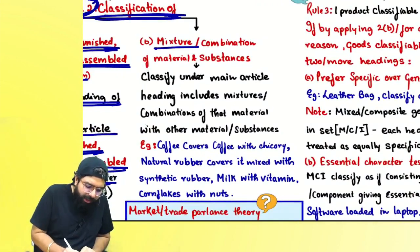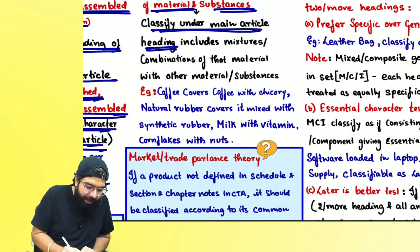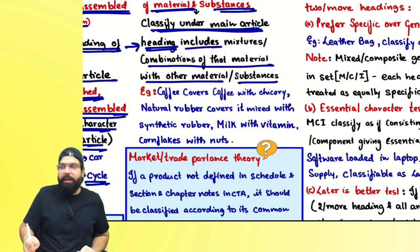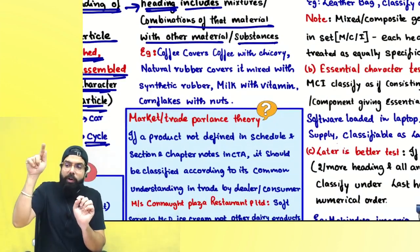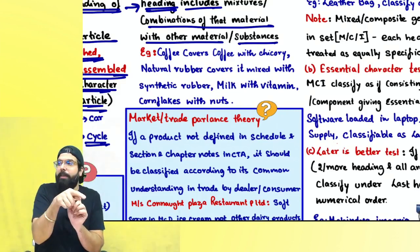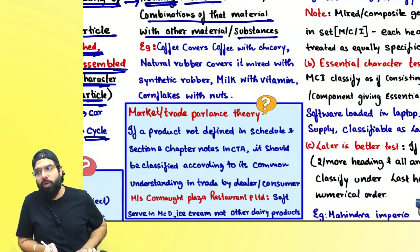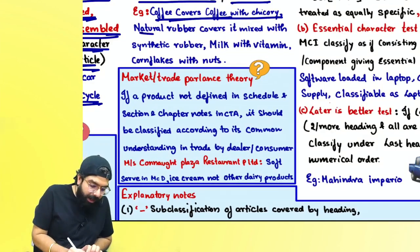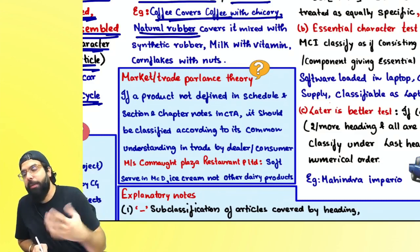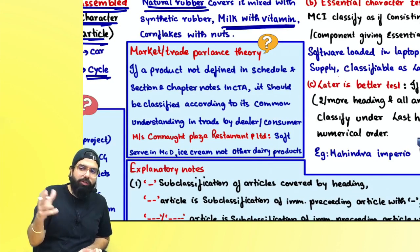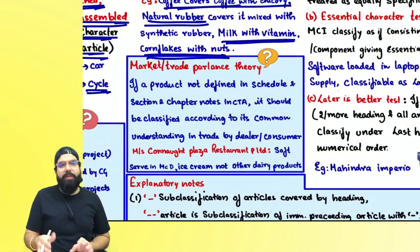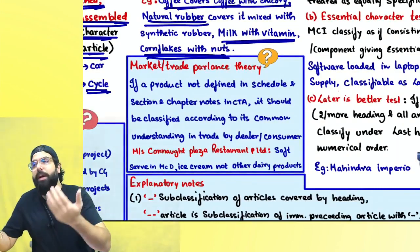Rule 2B says if there is a mixture or combination of materials or substances, always classify under the main article's heading — because a heading always includes that material mixed with other materials or substances. For example, coffee's heading includes coffee mixed with chicory also. Rubber's heading will include natural rubber and natural rubber mixed with synthetic rubber. Milk's heading includes milk and milk with vitamins. Similarly, a complex heading includes that complex mixed with nuts also.